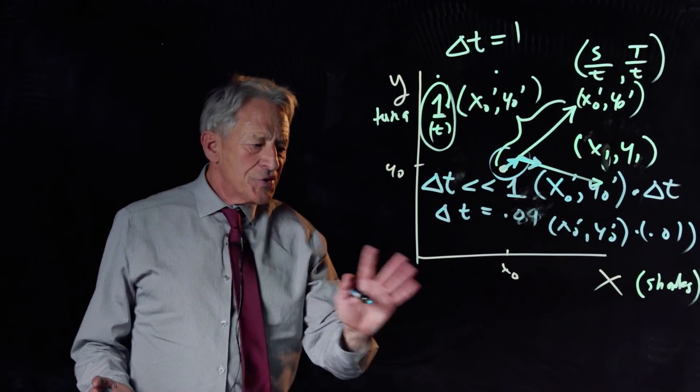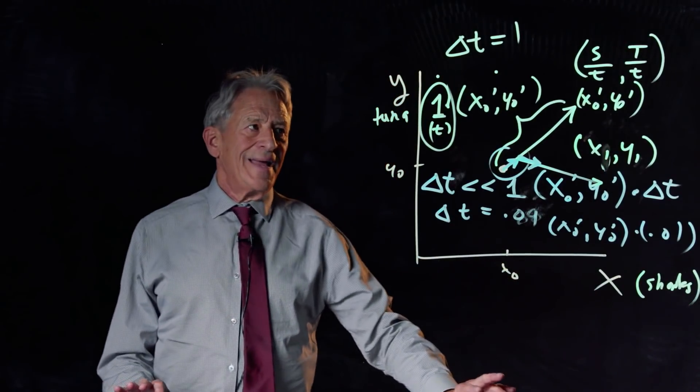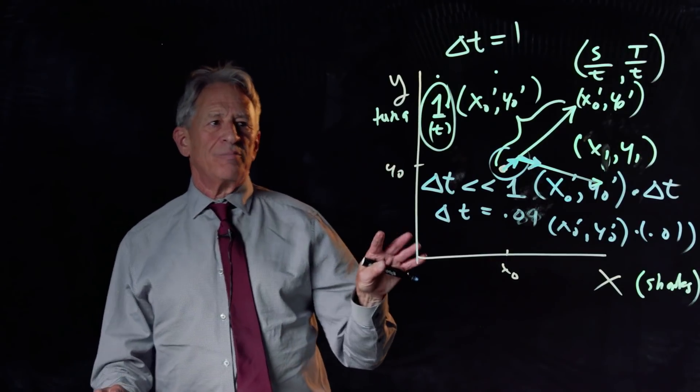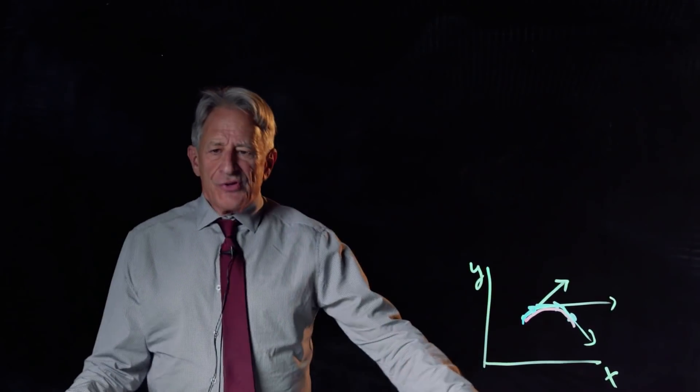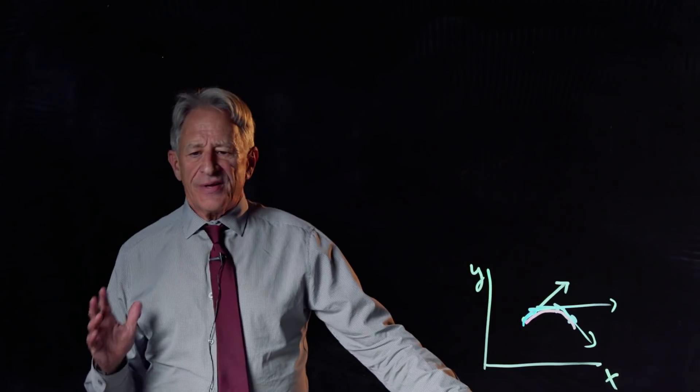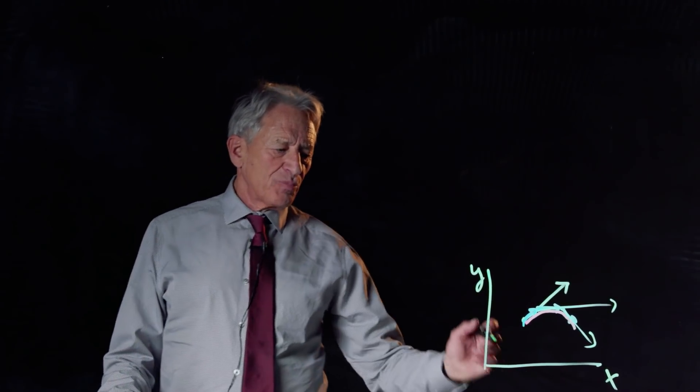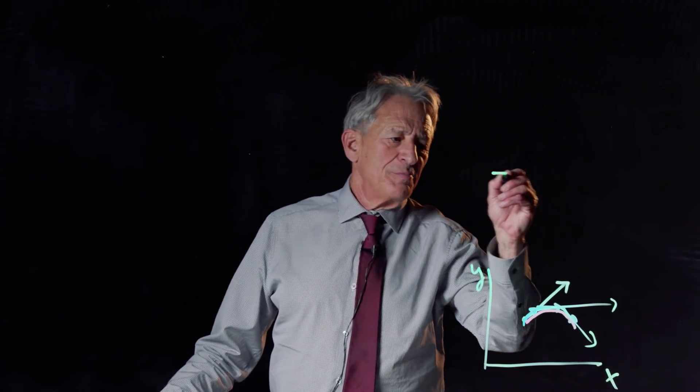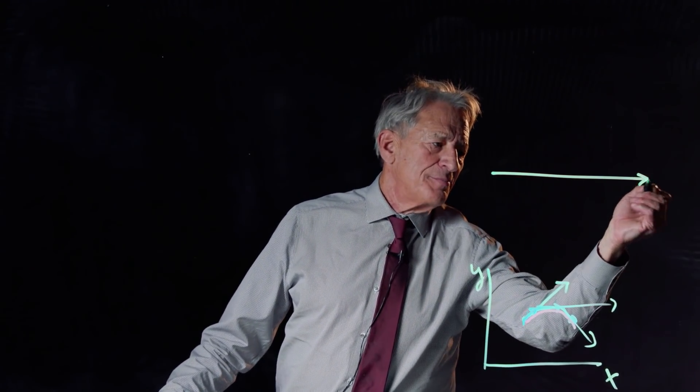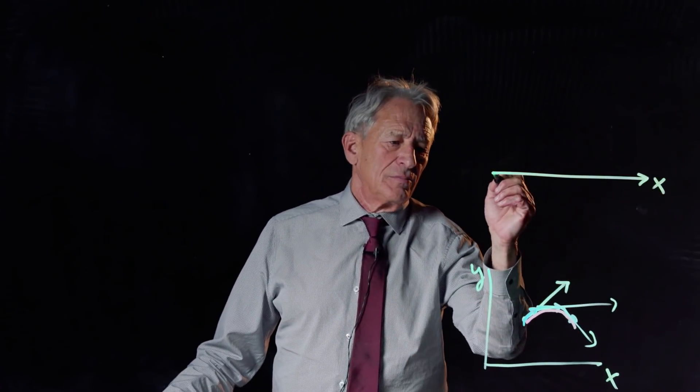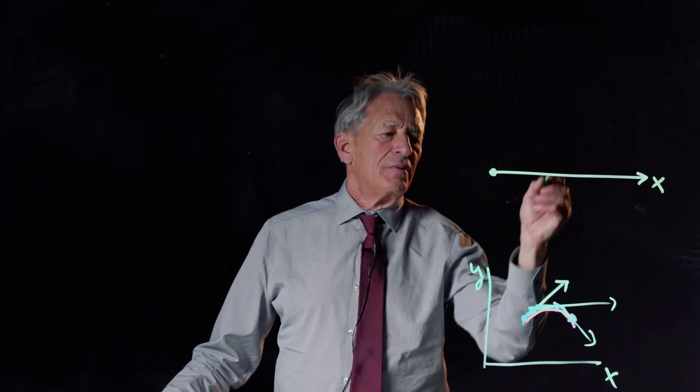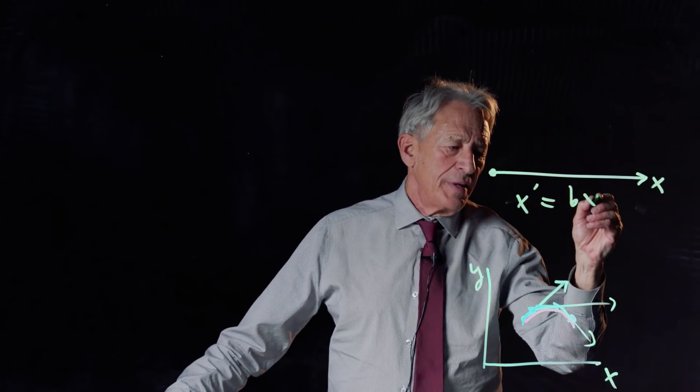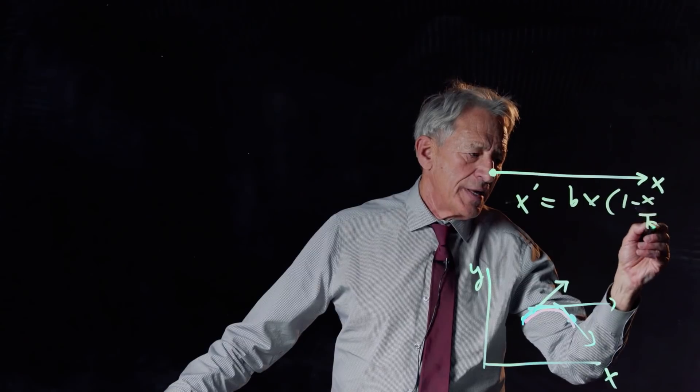Now, let's talk about what that looks like as algebra, how we actually do this computation. So for our very first example, let's not even deal with a 2D system. Let's deal with a very simple 1D system, like logistic growth. You remember, x prime equals bx times 1 minus x over k,